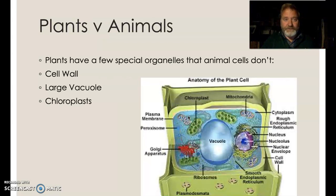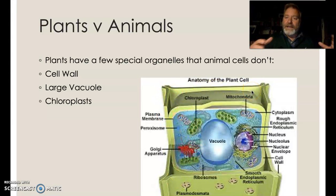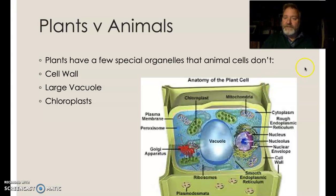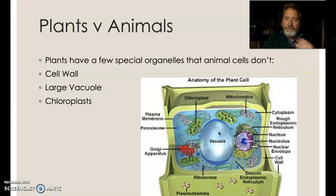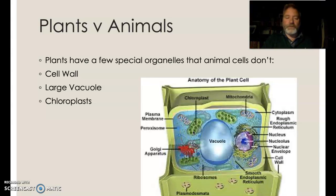Plant cells are much bigger than animal cells partly because of the vacuole. Plant cells also have a rigid cell wall around the outside, unlike animal cells. So there are three big differences: the rigid cell wall, which gives the plant structure because they don't have a skeleton — we have bones and muscles, but plants have cell walls — and the vacuole being full of water puts pressure on that cell wall to give structure to the plant. The third difference is the chloroplasts.